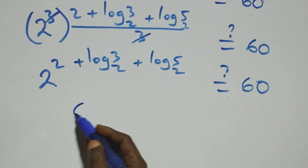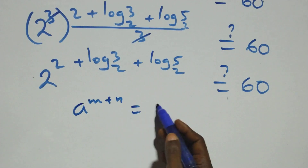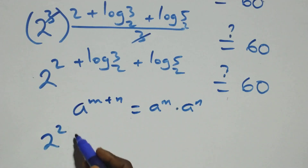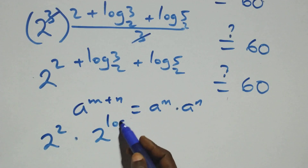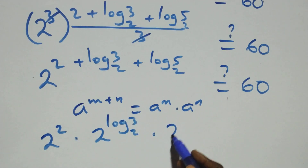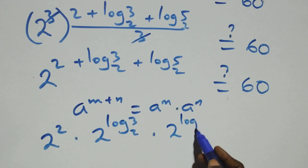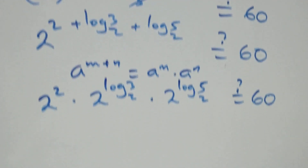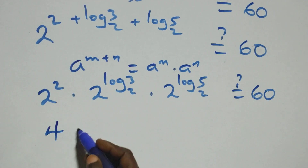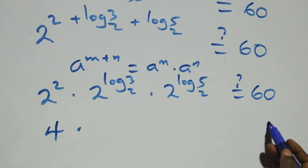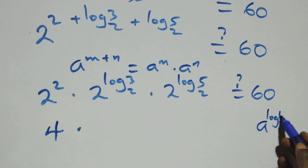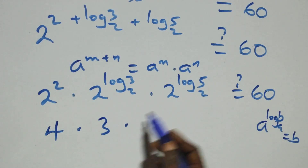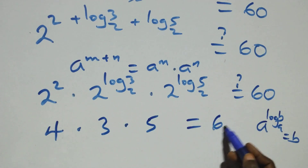When we apply the indices law, a raised to power n plus m is the same thing as a raised to power n times a raised to power m. At this here, we have two squared times two raised to power log three base two, times two raised to power log five base two, equals sixty. Two squared is four. Then applying the identity a raised to power log b to base a equals b, we have four times three times five equals sixty.